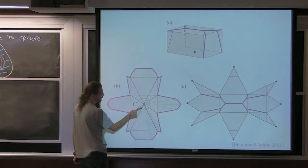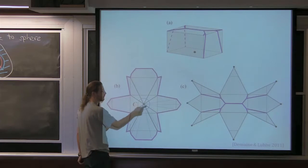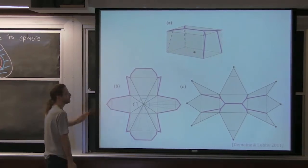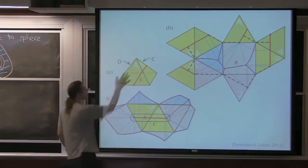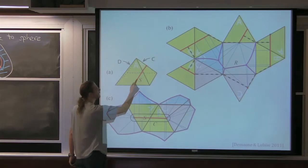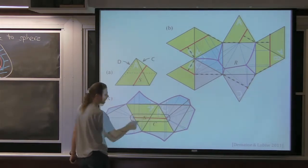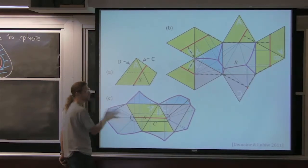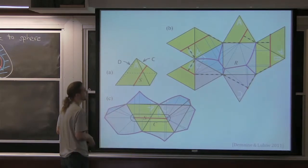We're going to generalize the source unfolding. In the source unfolding, you shoot shortest paths from point X. We generalize by thinking of X as a tiny little circle: outside the circle we do source unfolding, and inside the circle we do star unfolding. When the circle is really tiny, it is just the source unfolding. In the next more general example, instead of a single point, we take a geodesic arc — a straight line on the surface.